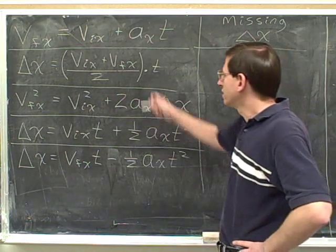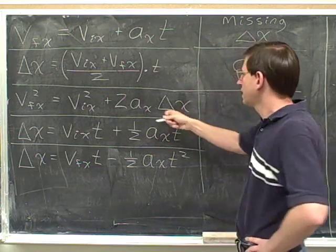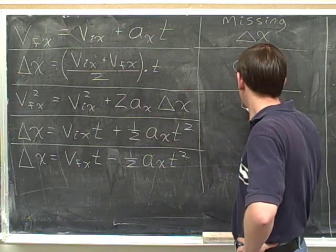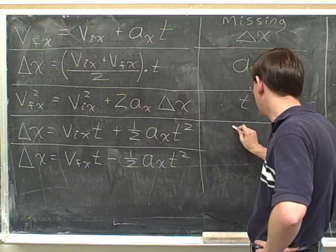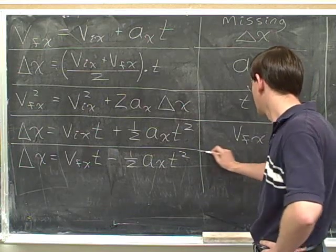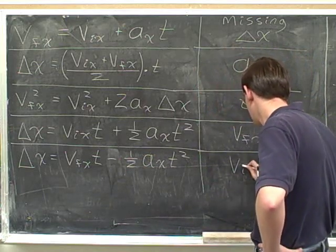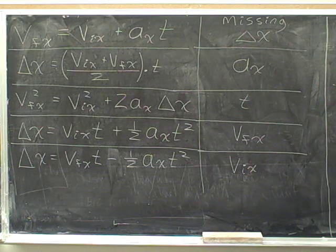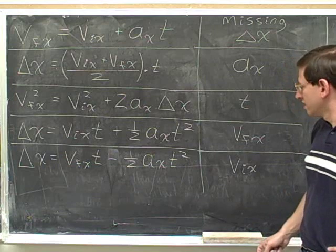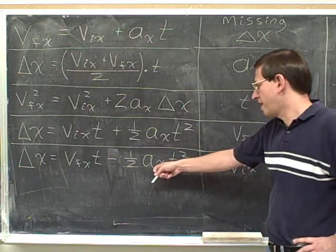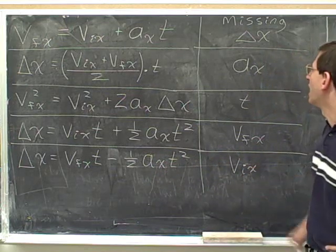I hope you gave that a shot. This equation is missing the acceleration. And this one is missing the time. And this one is missing the final velocity. And this equation is missing the initial velocity. So I hope it's apparent to you where all these are coming from. If you look at this equation over here, it has all four kinematics variables except it does not have the initial x velocity — that's the missing variable.